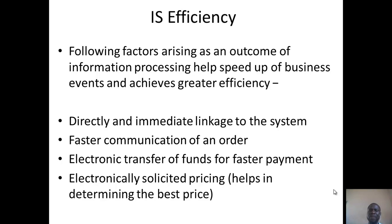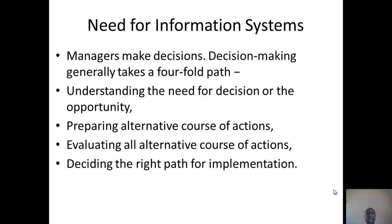We'd rather make use of electronic platforms where money can be transferred from one bank to another without any hassle. And then we have electronic solicited pricing — you can determine the prices of the commodity you are selling on the internet from several portals, which will inform you how much to sell yours so that you don't price yourself out of the business. This is all due to an efficient information system deployment. Why is there a need for information systems? Managers make decisions, and in making decisions, you take four paths: understanding the need for the decision, preparing alternative courses of action, evaluating all alternative courses of action, and deciding the right path for implementation. Information is key and will help fashion your final decision.